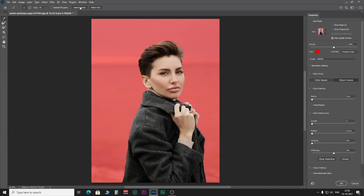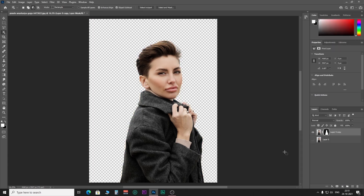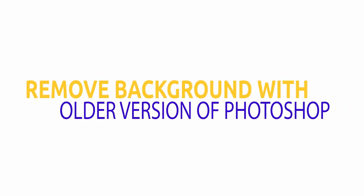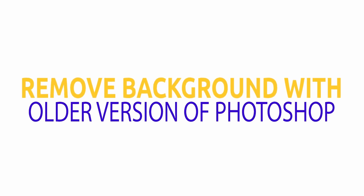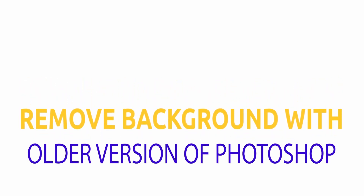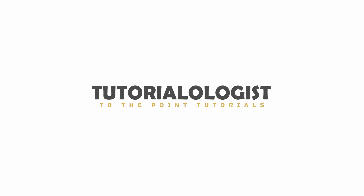In the newer version of Photoshop, removing the background is really easy using the subject selection tool. But what if you have an older version of Photoshop, like CS6? In this video, I am going to show you how to remove and change the background of an image using Photoshop CS6, which is an older version of Photoshop. So without any further delay, let's quickly start the tutorial.